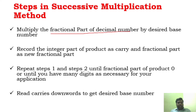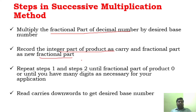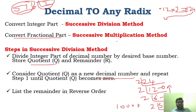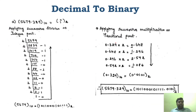The steps for successive multiplication: multiply the fractional part of the decimal number by the desired base and record the integer part as the carry. Leave the carry and bring only the fractional part as the new fractional part. Repeat until it becomes 0, then write the carry values from top to bottom. Remember: successive division for integer part, successive multiplication for fractional part.